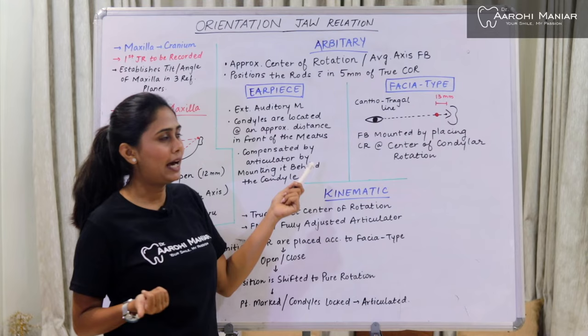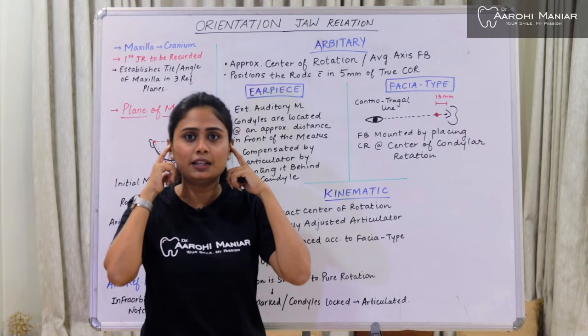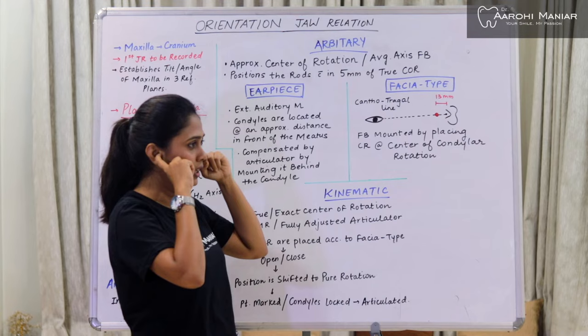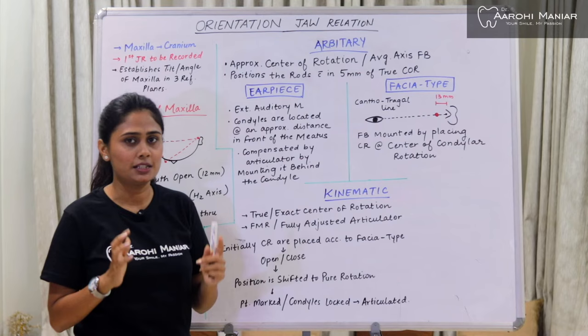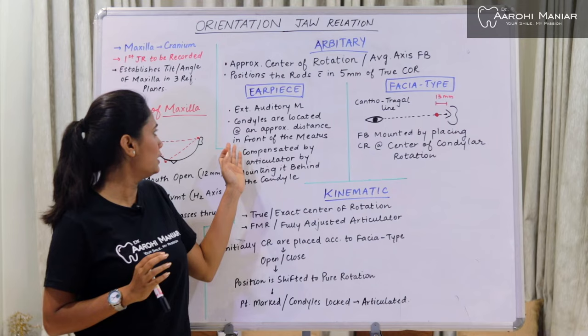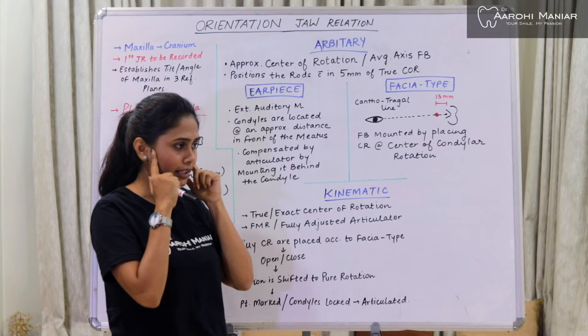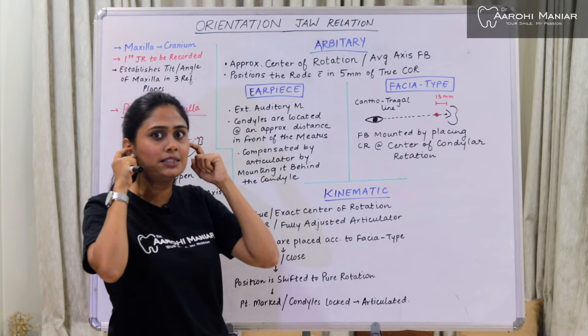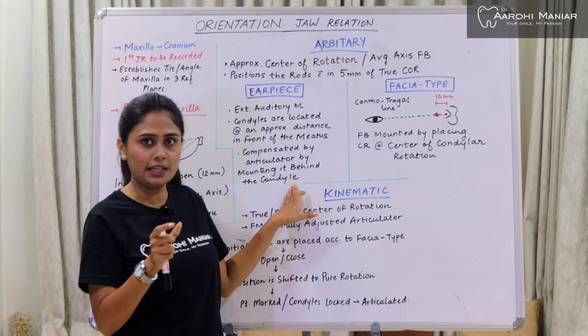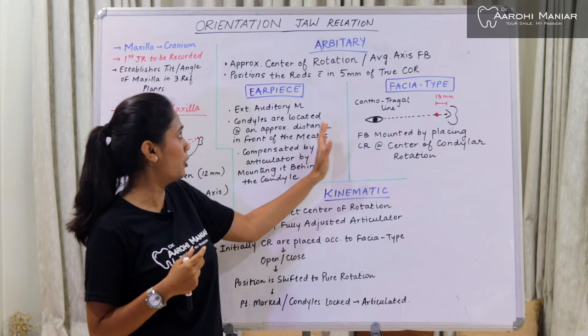In the earpiece type of face bow, we put our condylar rods in our external auditory meatus. The condyles are located at an approximate distance in front of the meatus — the external auditory meatus does not coincide with the exact center of rotation of our condyles. In the earpiece type of arbitrary face bow, we put our condylar rods inside our ears, and this is compensated by the articulator by mounting the rods behind the condyles when we take it to the lab.